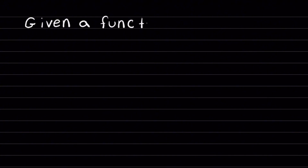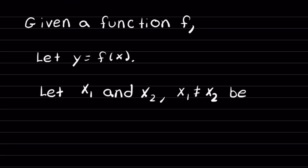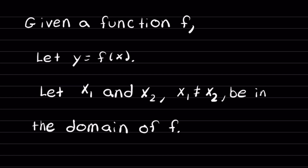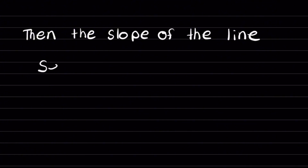Let's get into the secant line a little more closely so that we can understand the definition of the derivative. Given a function f, let y equal f of x. Let x1 and x2, such that x1 does not equal x2, be in the domain of f. Then, the slope of the line secant to f joining the two points.